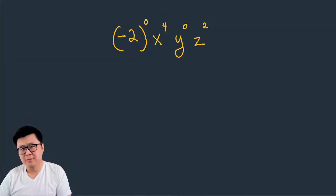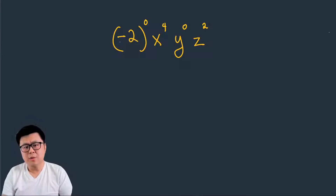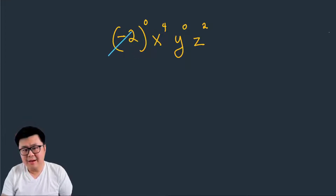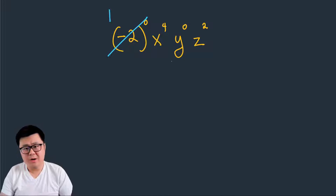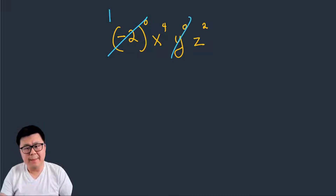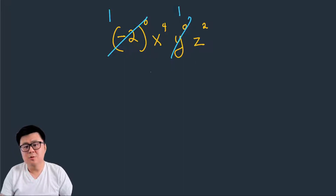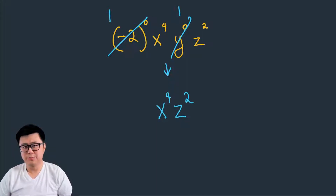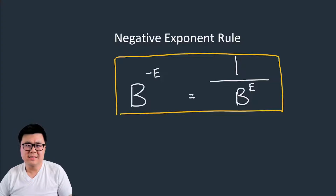Your turn — pause and give this one a try. Here's how to do it: the first bracket, negative two to the power of zero — the bracket is the base, so the entire thing becomes one. The x to the four we don't touch. The y to the zero becomes one. The z squared we leave alone. So our final answer is x to the four, z to the power of two.